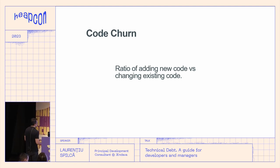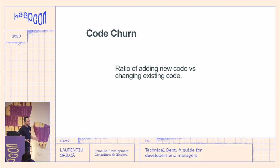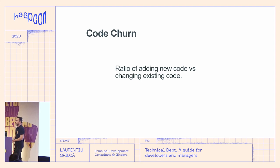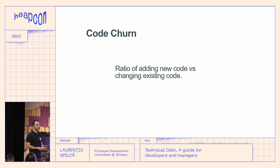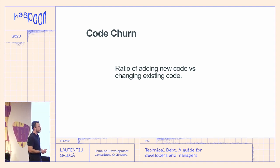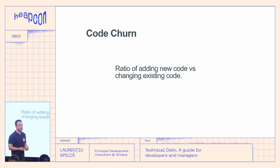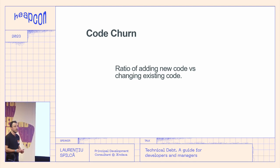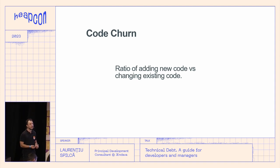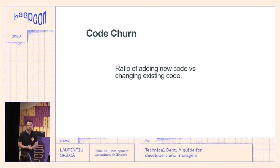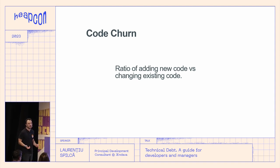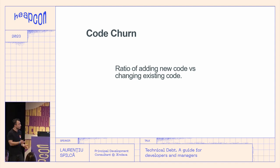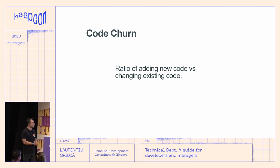People ask me: how can you find out if you are at the point of no return? How can you measure profitability? How can you give a client enough knowledge to address it? There are many metrics to consider — if you don't have metrics, you can't find solutions. One metric is code churn: the ratio of adding new code versus changing existing code. More new code being added is generally good; more code being changed with little new code being added is bad.